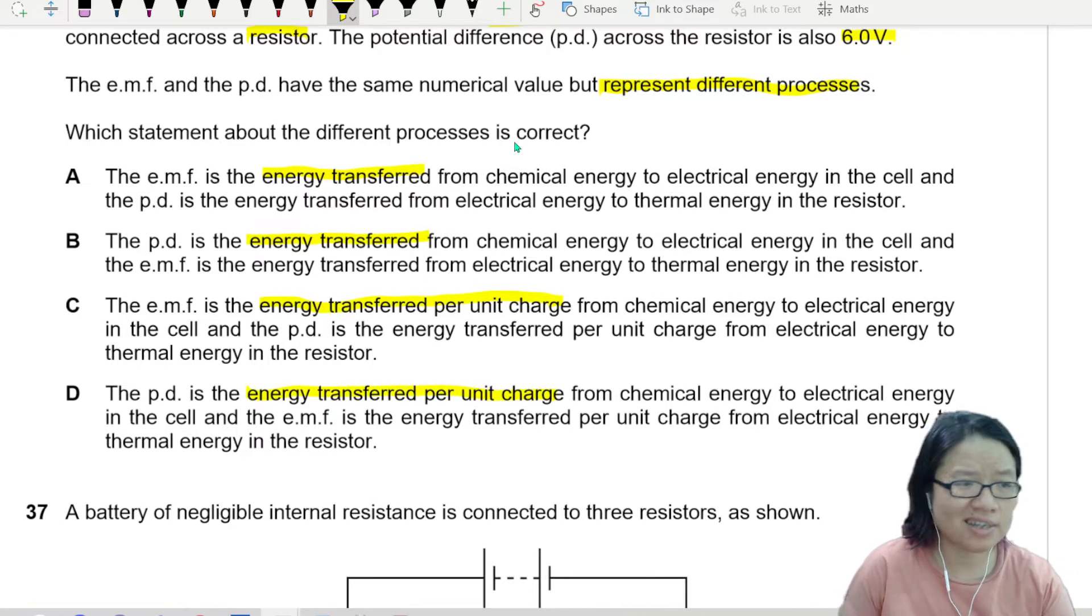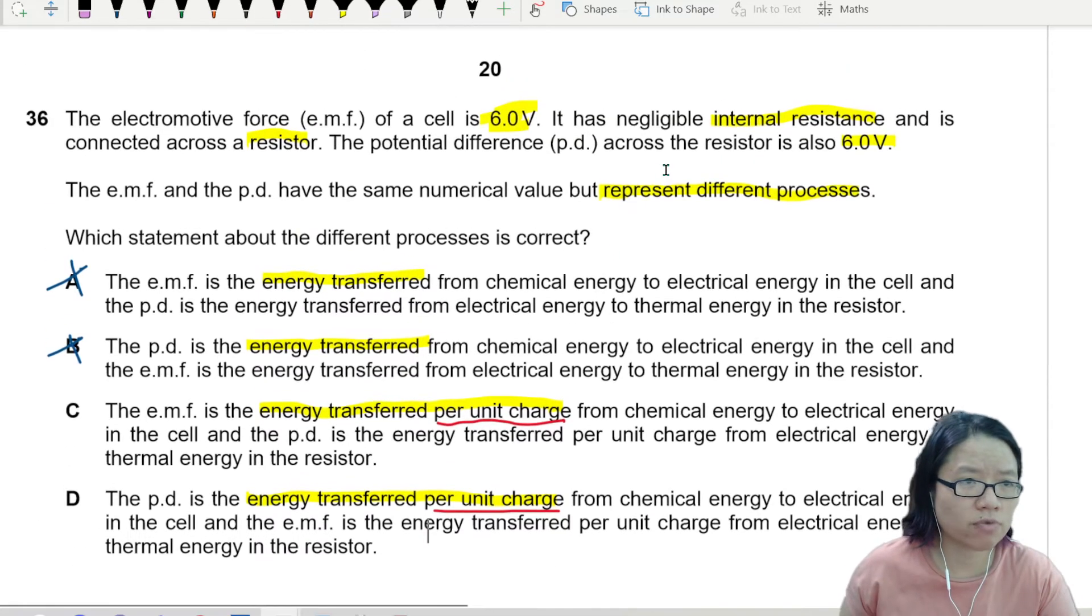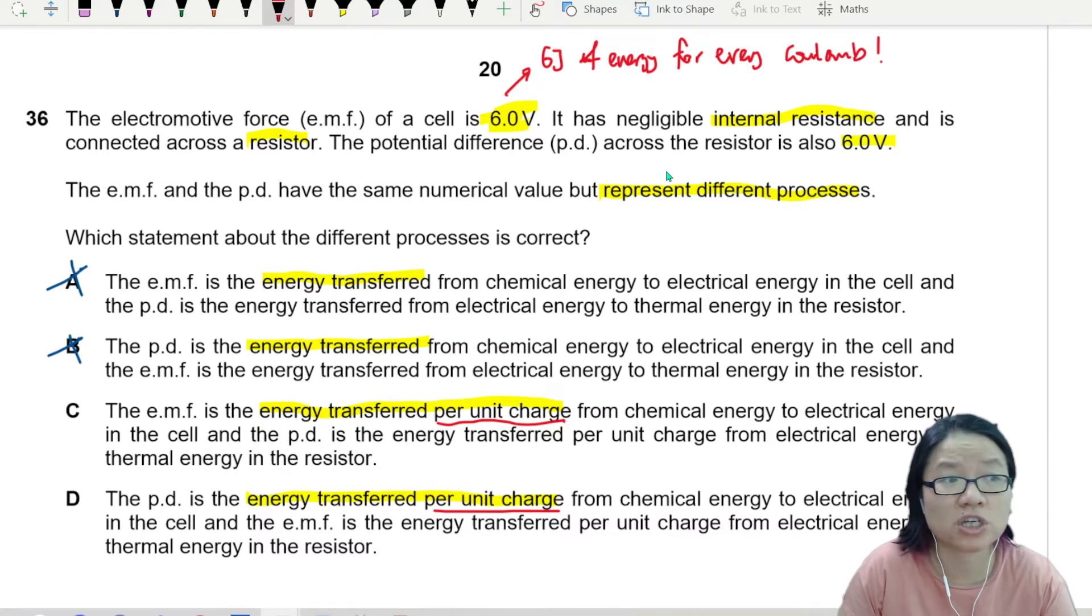It's either energy transferred or energy transfer per unit charge. So obviously, because the definition of both of this, it has to be per unit charge. If not, then the unit will be Joule instead of volts. Okay, so this 6 volt here tells me that there is 6 Joule of energy for every coulomb.